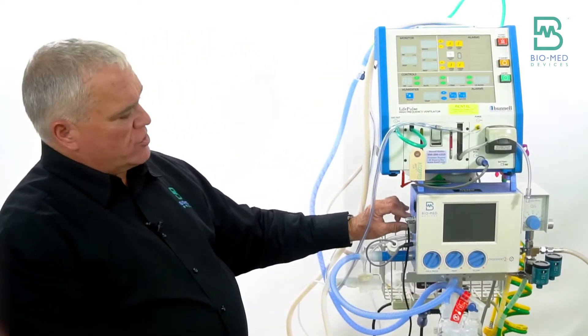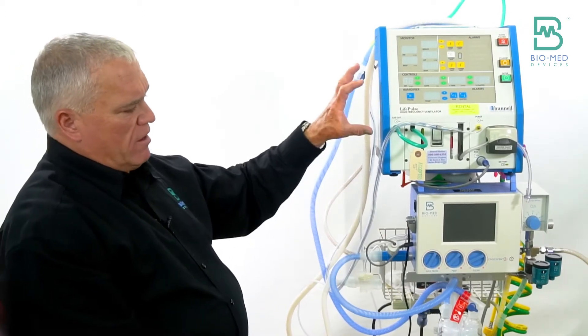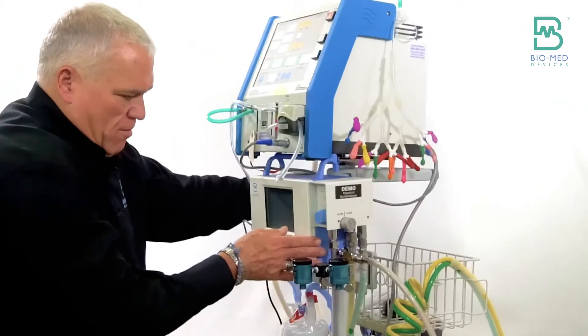We're not using the flow sensor when we use it with the jet. So we're going to use the vent in constant flow mode.